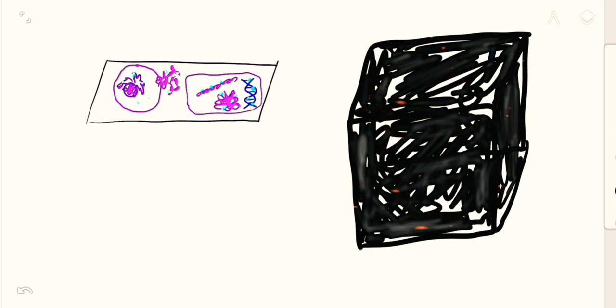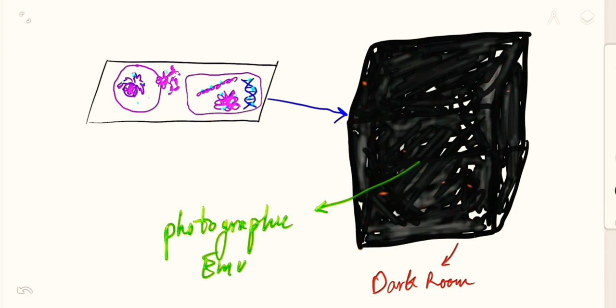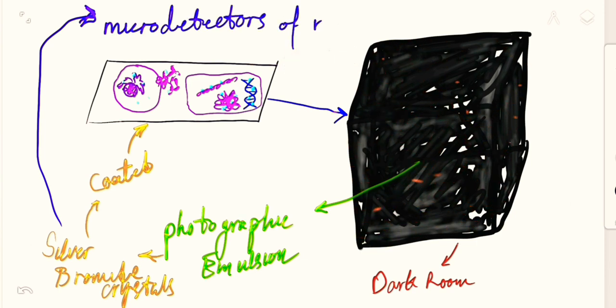For this to happen and to be able to effectively be studied, it has to be inside a dark room. Inside that dark room, we will have to put photographic emulsion on it with this emulsion would have silver bromide crystals and these crystals would be coated on the slide. The crystals of silver bromide will act as micro detectors of radiation on the slide.